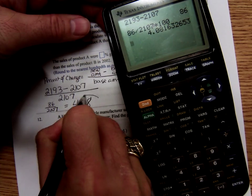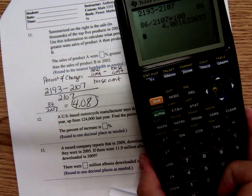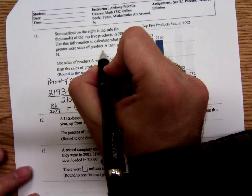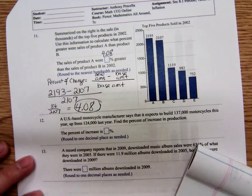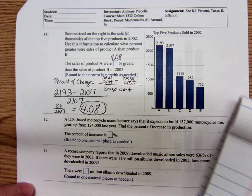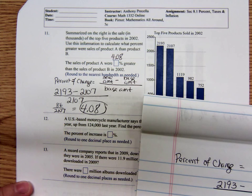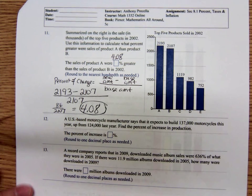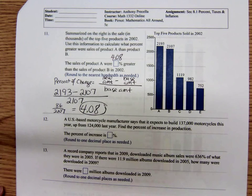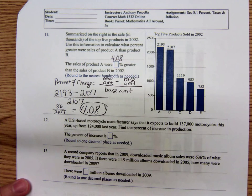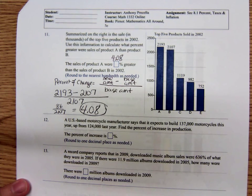We want to round to two decimal places. Since the digit after the eight is smaller than a five, we'll just drop everything and call it 4.08 percent. So the sale of product A was 4.08 percent greater than the sale of product B. This is stuff you hear about all the time if you read any sort of business report or something. Sale of the iPhone 6 was how much greater than the sale of iPhone 5 last year, stuff like that.